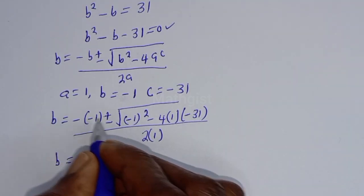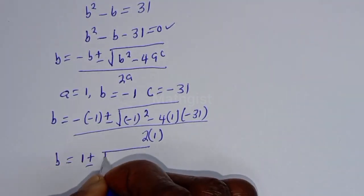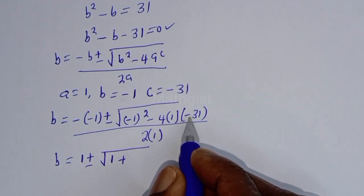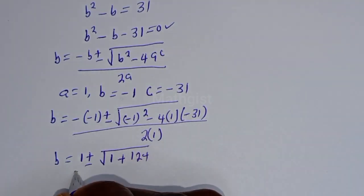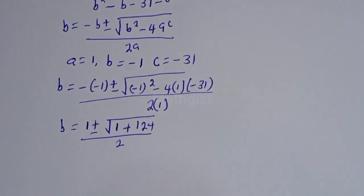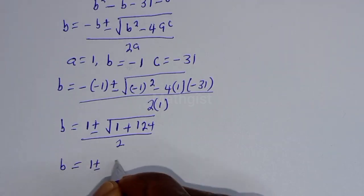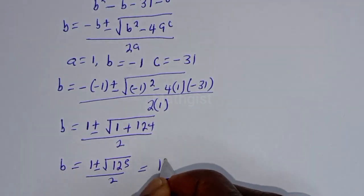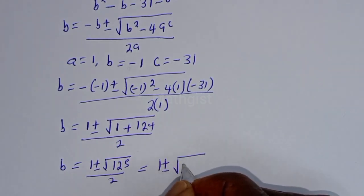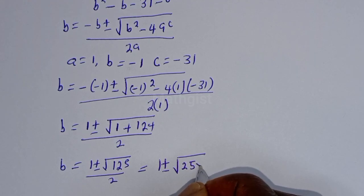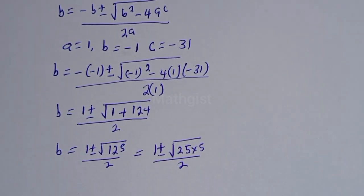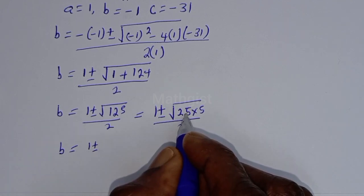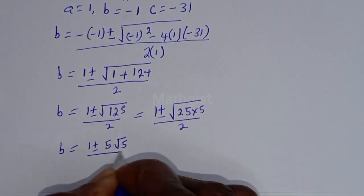This gives b = (1 ± √(1 + 124)) / 2 = (1 ± √125) / 2. Since √125 = √(25 × 5) = 5√5, we get b = (1 ± 5√5) / 2.